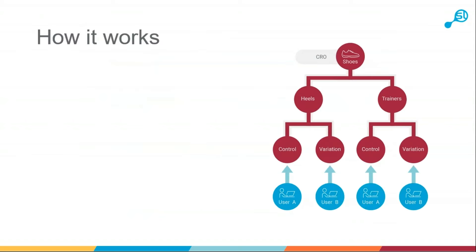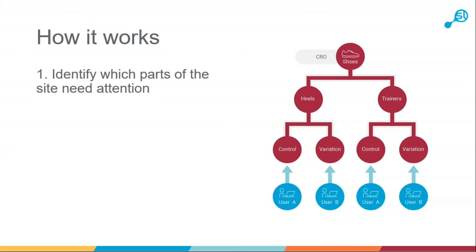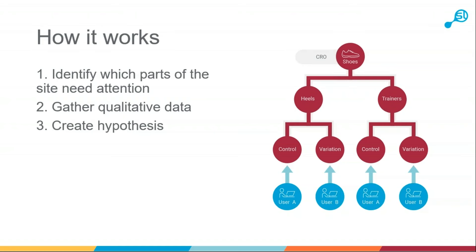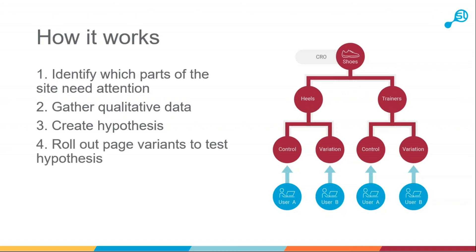CRO is all about testing how changes on a page can impact the behavior of a user. Step one: identify which areas of the site aren't performing as well as they should, using quantitative data from CRM systems, analytics, and third-party tools such as Hotjar or Crazy Egg. Then gather more data through customer surveys and focus groups to find out not just what isn't working, but why. Use those insights to create a hypothesis — for example, if we made the call to action clearer or a different colour, would more people convert? Then create and roll out those page variants to test that hypothesis.